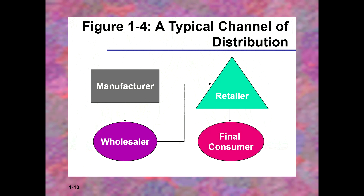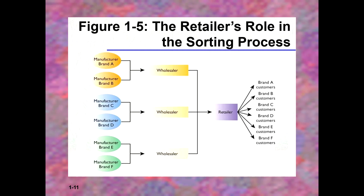A typical channel of distribution goes from manufacturer to wholesaler to retailer to final consumer. Certain companies have changed that model. The retailer's role in sorting the process shows how a large number of manufacturers flow through wholesalers and into retailers, and then to customers. It's a pretty stable process even today.